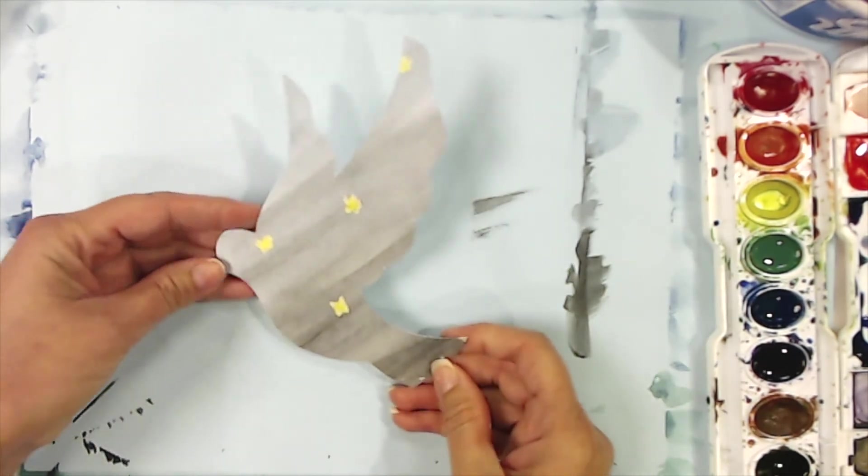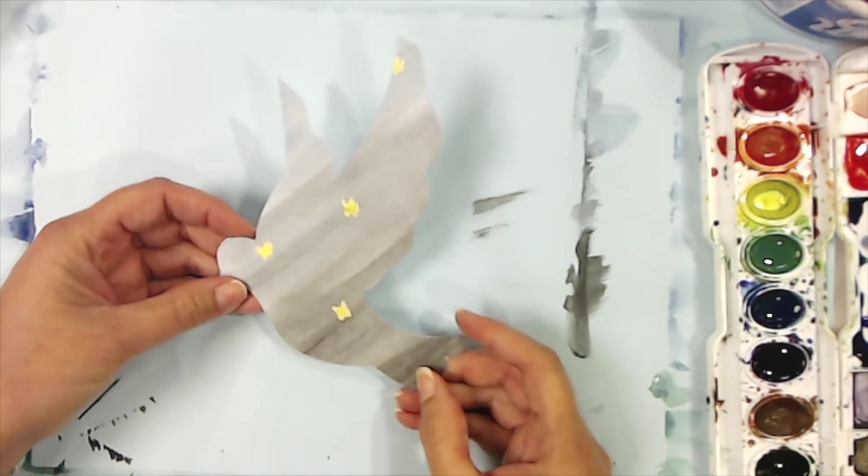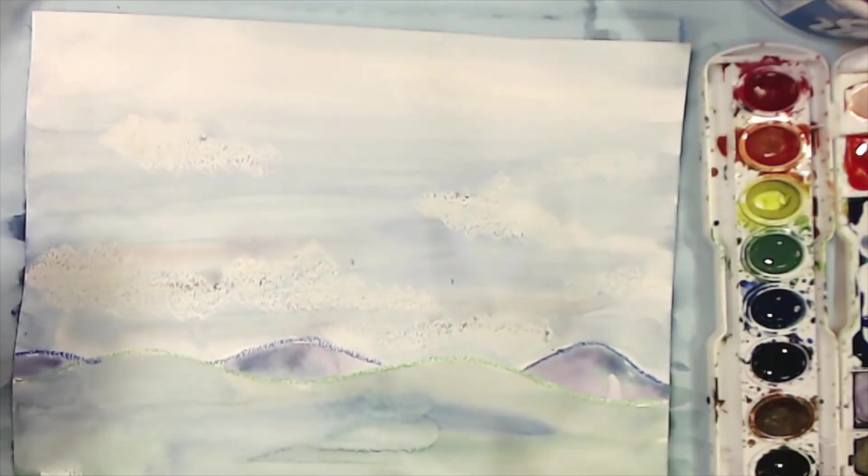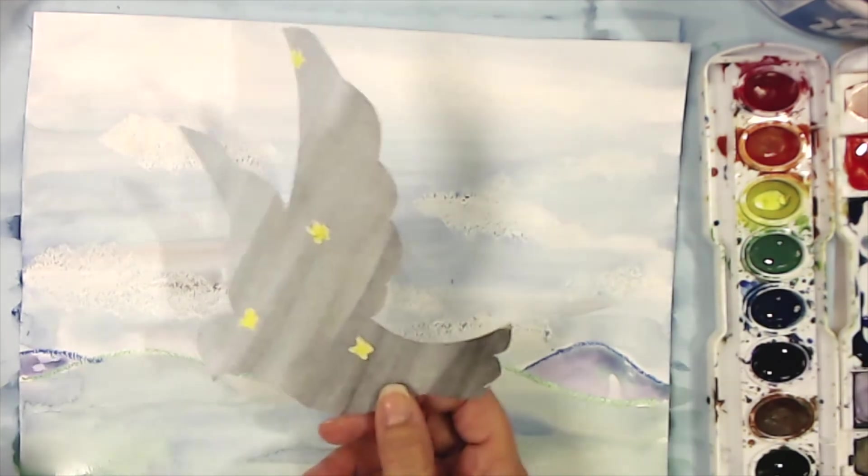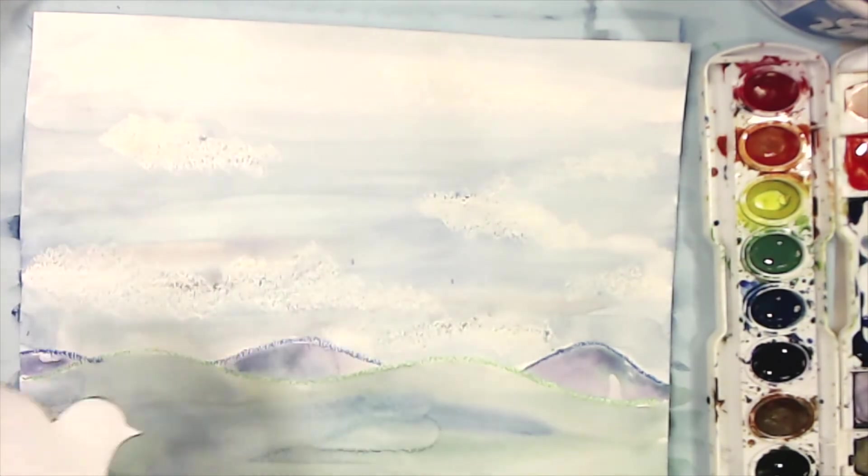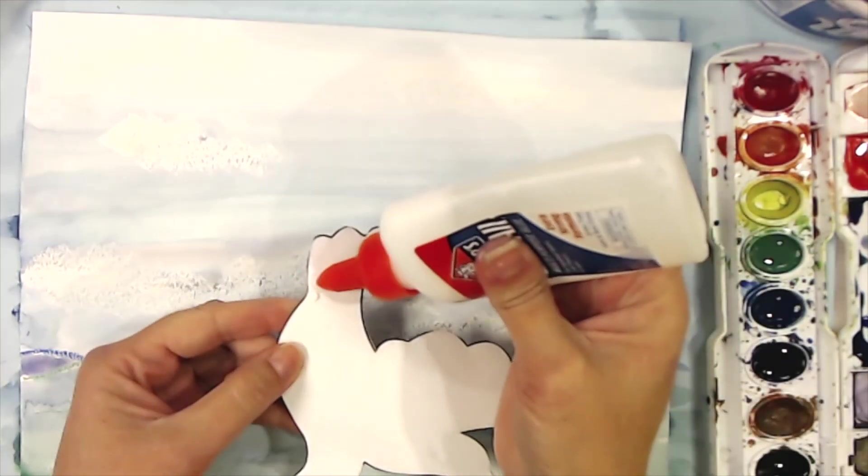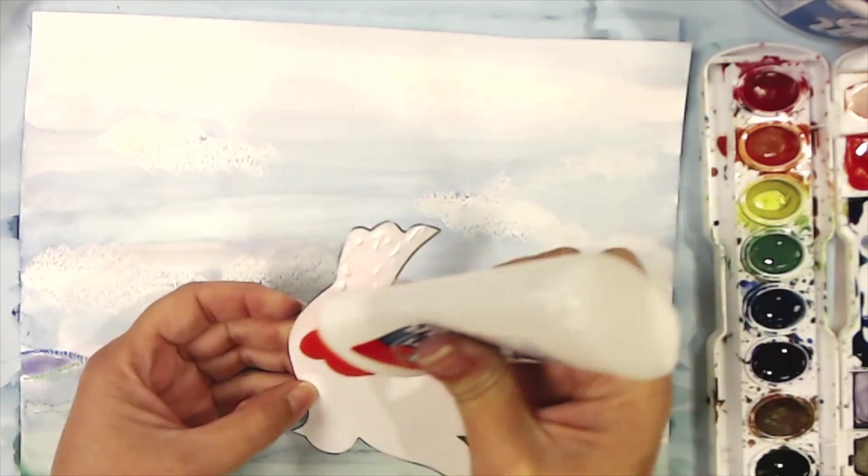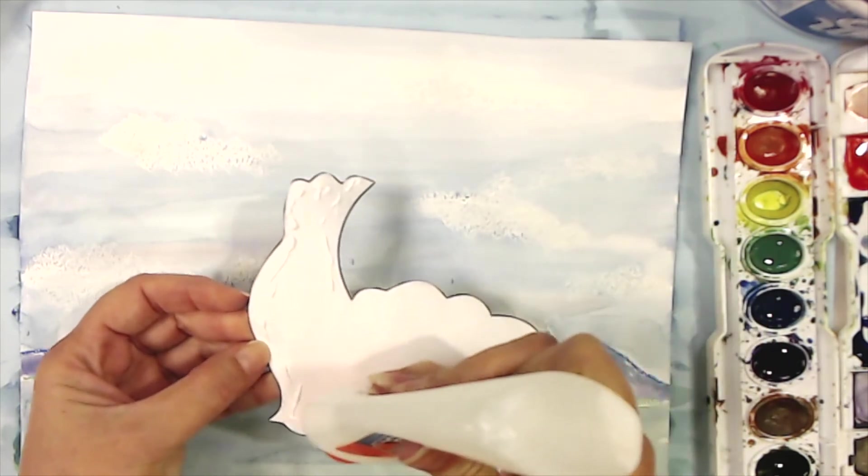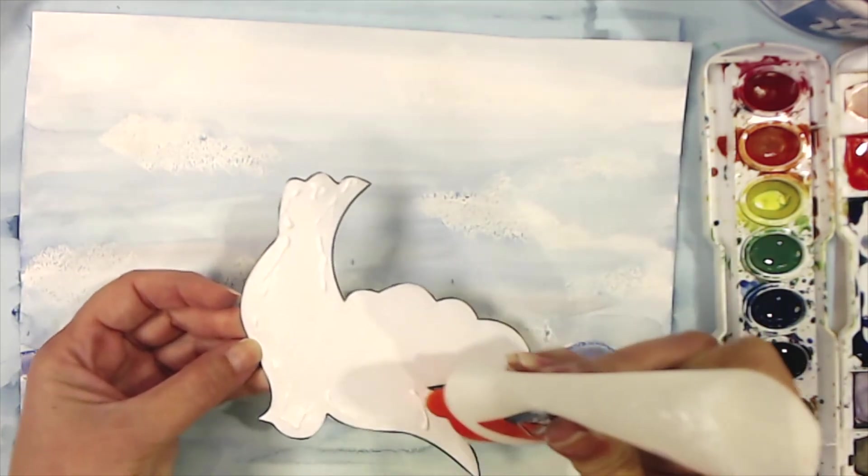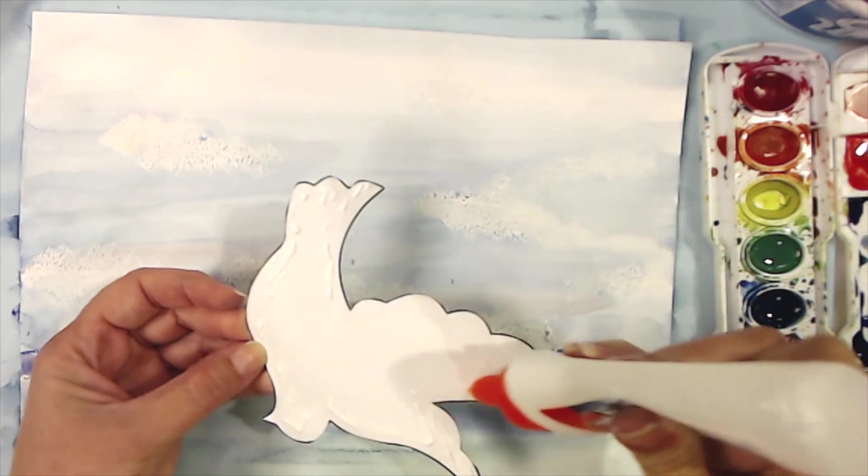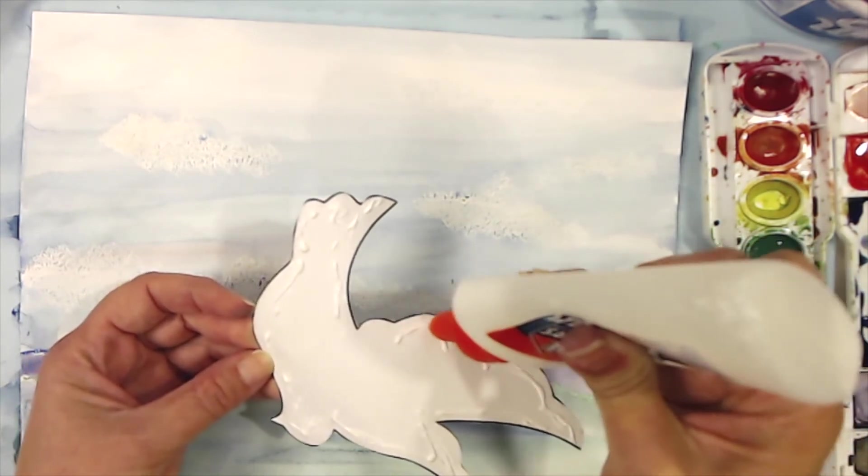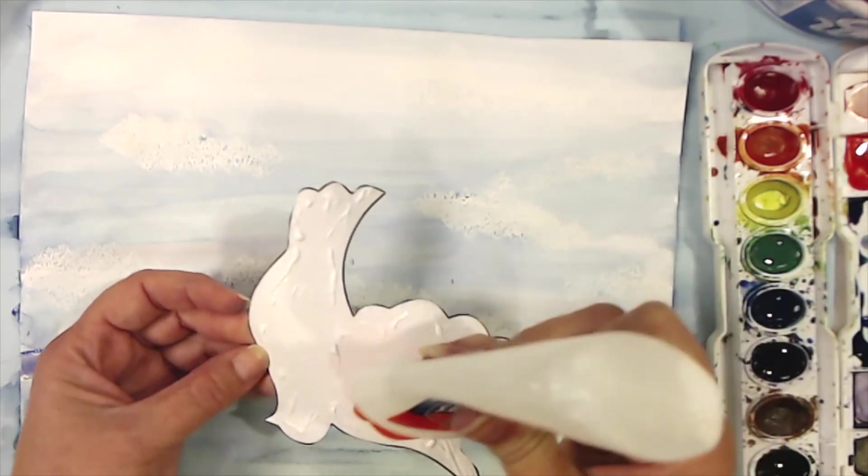Okay, now we've got our night sky dove and our background. I'm going to get some glue to glue this on here. Today I'm using some regular white liquid glue. If you have a good glue stick, you are welcome to use that. I find that the liquid glue holds much better when you're working with these thick and painted papers. So I put some on like so.